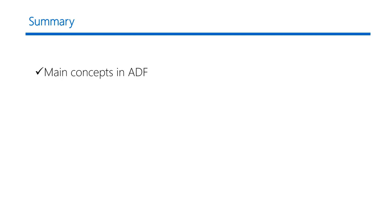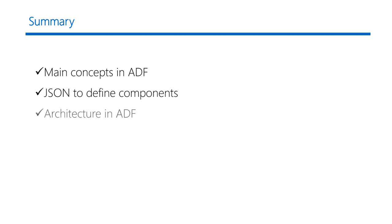In summary, I have covered the important concepts in ADF — namely the pipeline, data set, linked services, and gateways — and understood how these components can be created with JSON to architect the schedule of data movement using ADF to pull data from both Blob store and SQL Server. This is just a simple workflow, and ADF can in fact orchestrate more complex data movements between a myriad of data sources and data sinks, rightfully becoming known as the SSIS in the cloud. Thank you.